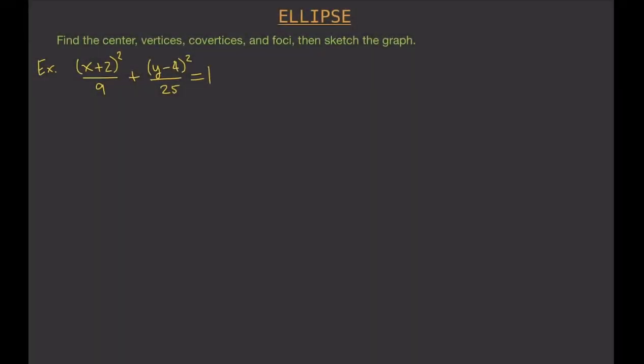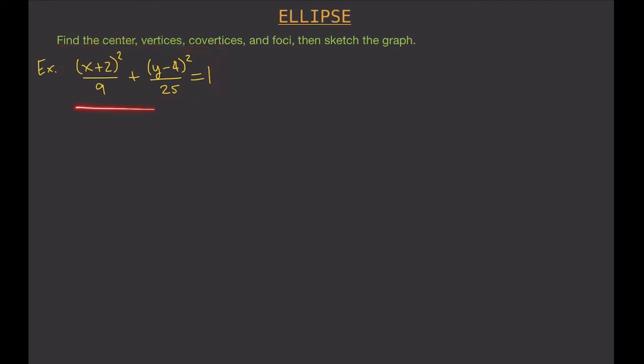Find the center, vertices, co-vertices, and foci, then sketch the graph. This is the equation that we are considering — it is an equation of an ellipse.